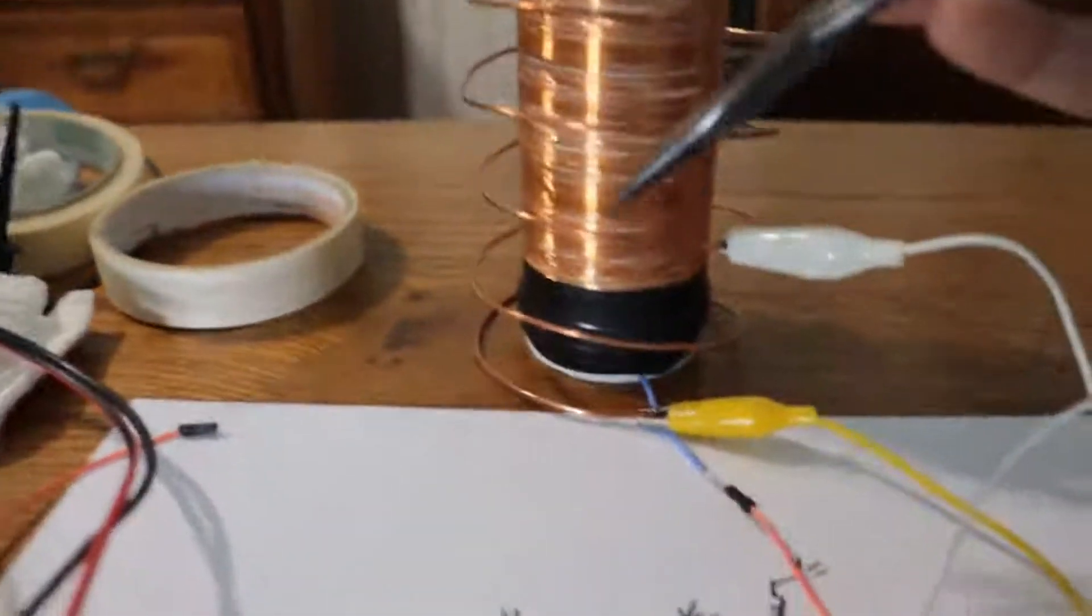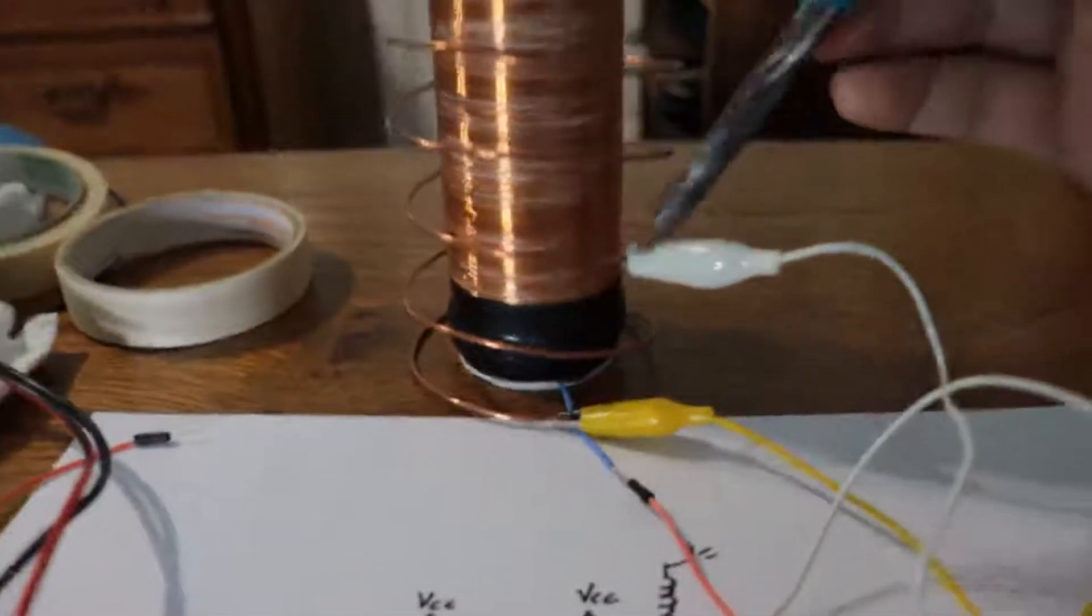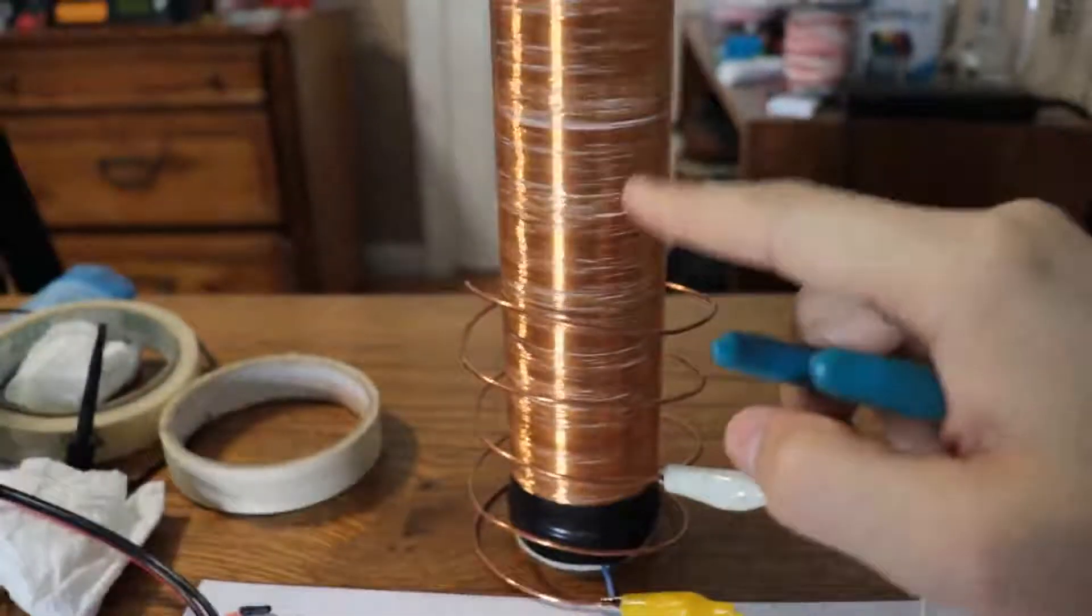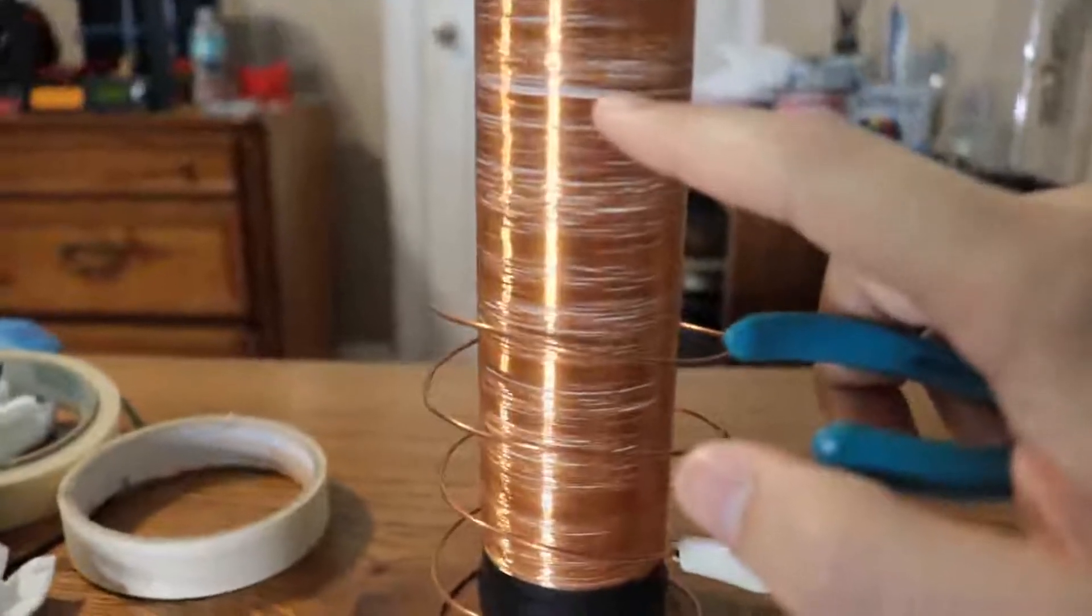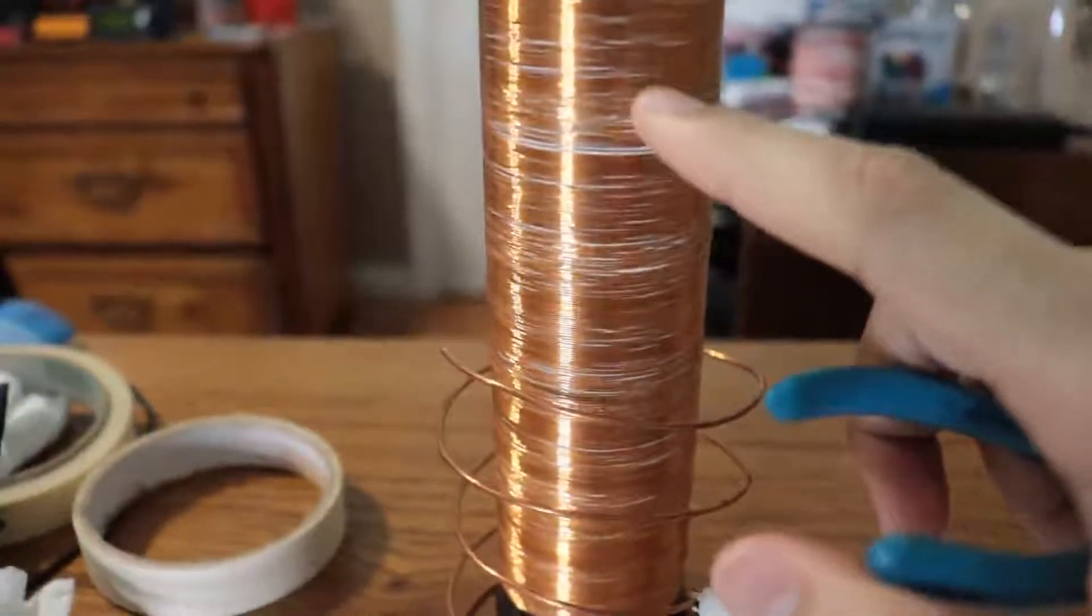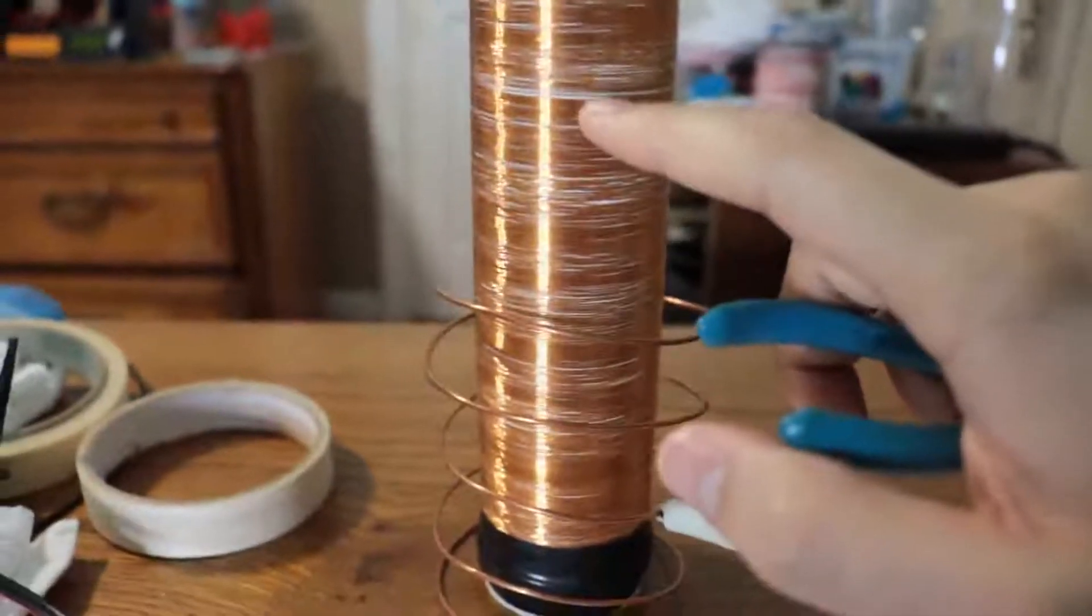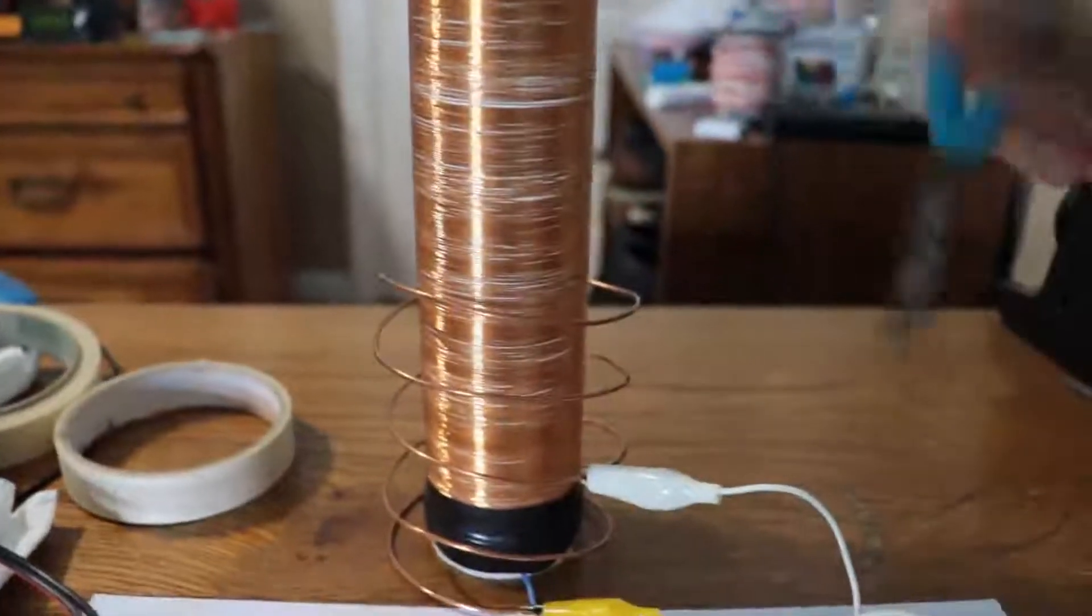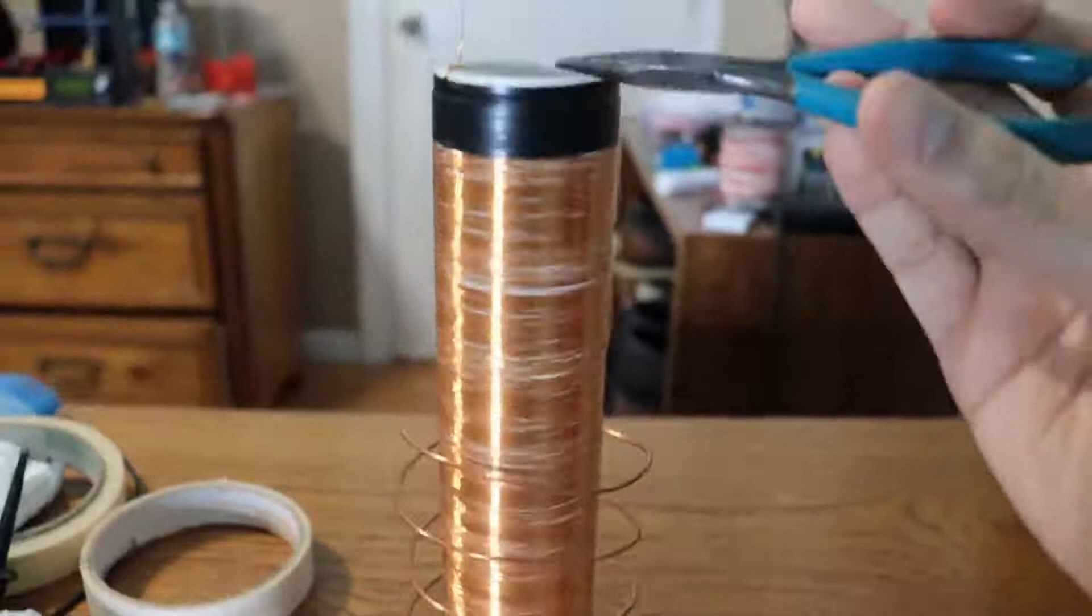And basically it's standing on its own. Eventually you might want to glue this to some type of fixture so it doesn't move and it doesn't touch the secondary coil. Another thing to note is that the spacing on this is not that good. So you want this to be as close as possible or as tight as possible. So you don't want to see any of the PVC pipe.